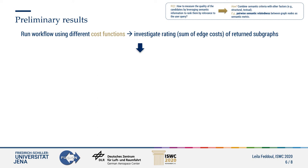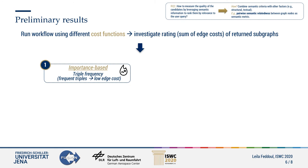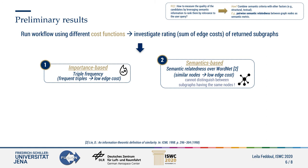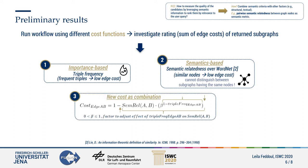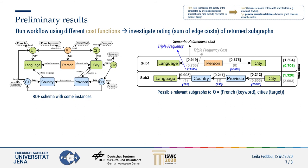We use three types of functions: triple frequency, which is importance-based, where frequent triples are considered more important and therefore given lower cost and preferred during exploration; semantic relatedness between two nodes A and B in the subgraph calculated over WordNet, which is semantics-based, where edges connecting more similar nodes are given lower cost; and finally, their combination, since semantic relatedness alone cannot distinguish between subgraphs having the same nodes.